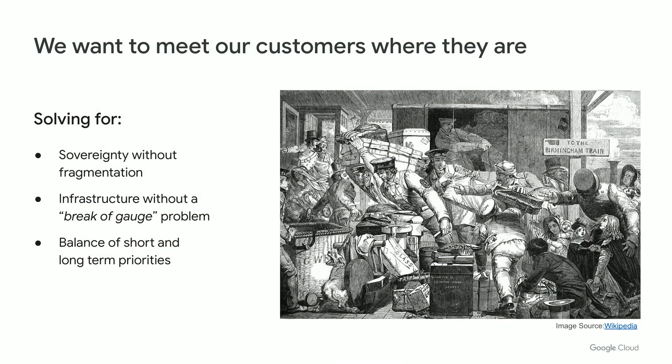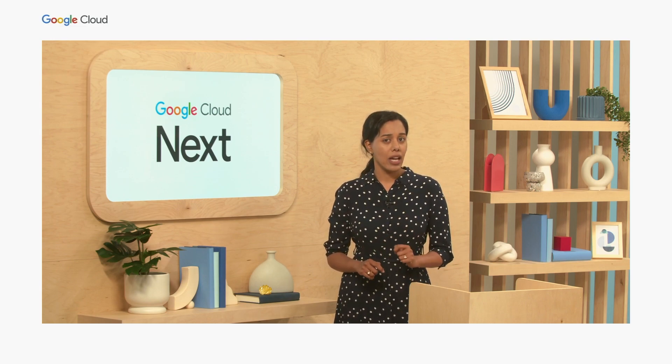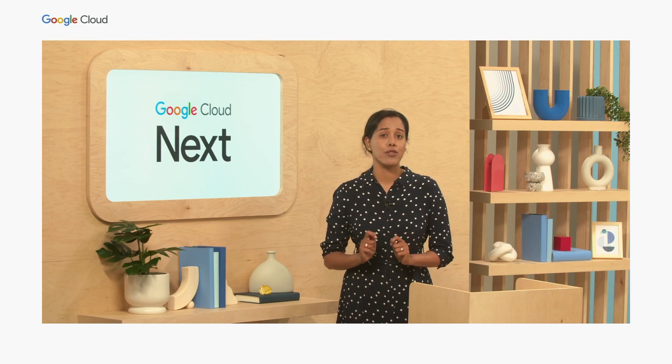Our overall goal is to meet customers where they are, while at the same time seeking to avoid issues of fragmentation and disruption to existing infrastructure. For example, the development of railways in the 19th century drove tremendous industrial progress and growth. However, the creation of different rail sizing standards in each country or region led to break of gauge issues when trains reached national borders, adding delays, cost, and inconveniences. We know that decisions organizations and governments make today will have a huge impact far into the future, so they must be very thoughtfully and carefully considered.